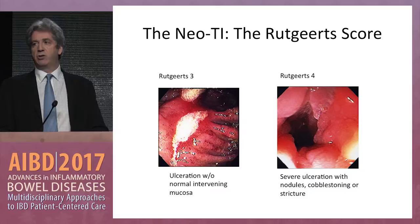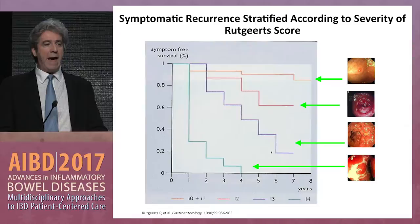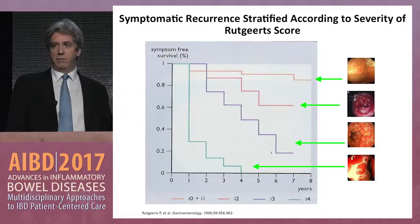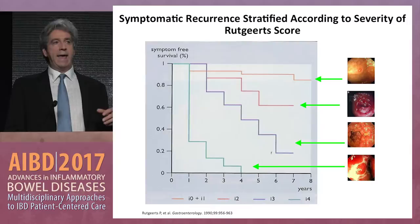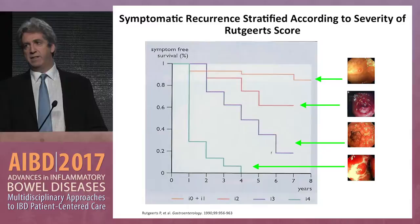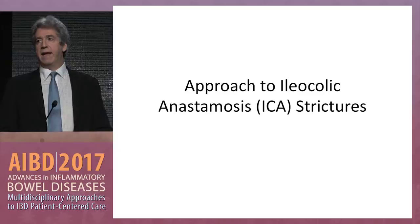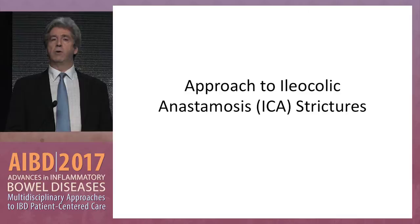Clearly these patients with Rutgerts three do require aggressive therapy, and Rutgerts four without question — as you'll see on the next Kaplan-Meier slide — these patients have either had treatment started too late or, if already on anti-TNF therapy right after surgery, have an abysmal outlook. If you have just less than five erosions, you have a very good long-term outlook. If you have a Rutgerts three — ulceration with no normal mucosa — you have 100% recurrence, and many of these patients have had surgery by year four.